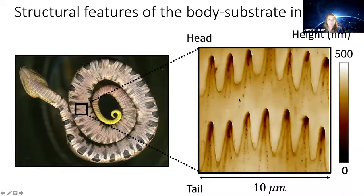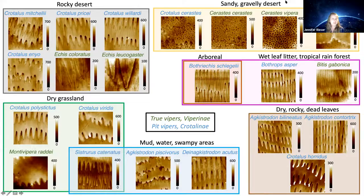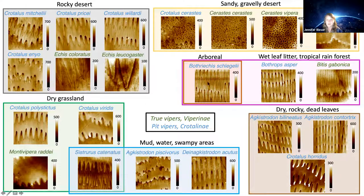We took these AFM scans for all individuals we investigated. For most of them, some variation of these head-to-tail oriented spikes exists, which is consistent with what has been found in previous literature looking at a wide variety of snakes across many different habitats.